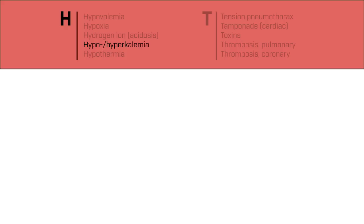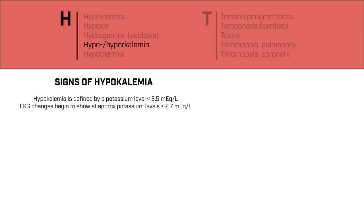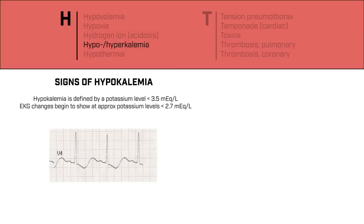Potassium is an important electrolyte which plays a role in maintaining normal electrical conduction and contraction of the heart. If levels become too high or too low, a patient may go into cardiac arrest. There are many causes of hypo and hyperkalemia, but regardless, it must eventually be determined to definitively treat your patient. However, in the emergent setting, certain medications should be considered. Hypokalemia is defined by a potassium level of less than 3.5 mEq/L, but you will begin to see EKG changes at levels less than 2.7. In the setting of hypokalemia, on an EKG you may see flattened or inverted T waves and prominent U waves. You could even see a prolongation of the PR interval.